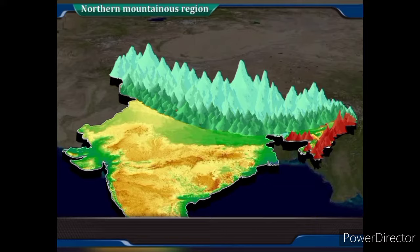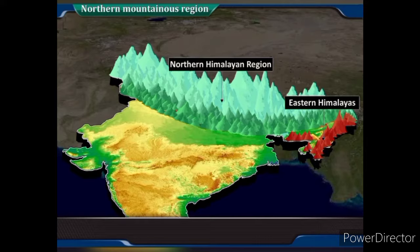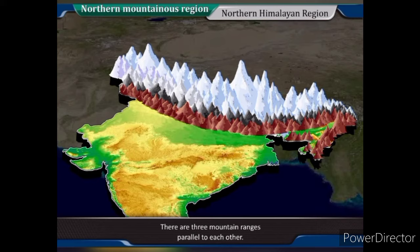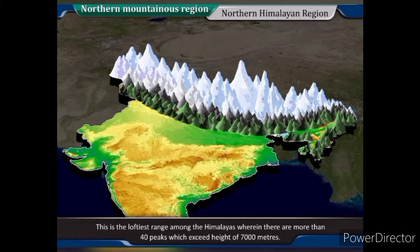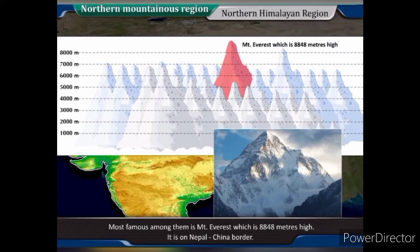The Himalayas on the whole can be divided into two divisions: 1. Northern Himalayan Region and 2. Eastern Himalayas. In the Northern Himalayan Region, there are three mountain ranges parallel to each other. The northern range is called the Greater Himalayas. This is the loftiest range among the Himalayas, wherein there are more than 40 peaks which exceed a height of 7,000 m. Most famous among them is Mount Everest, which is 8,848 m high.